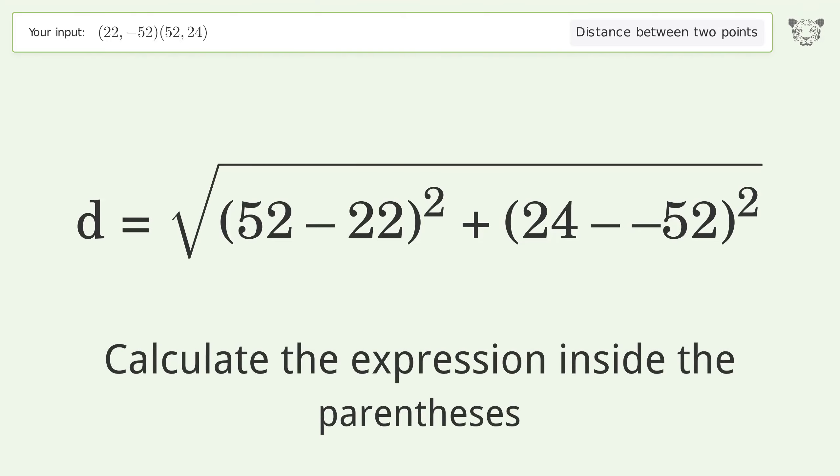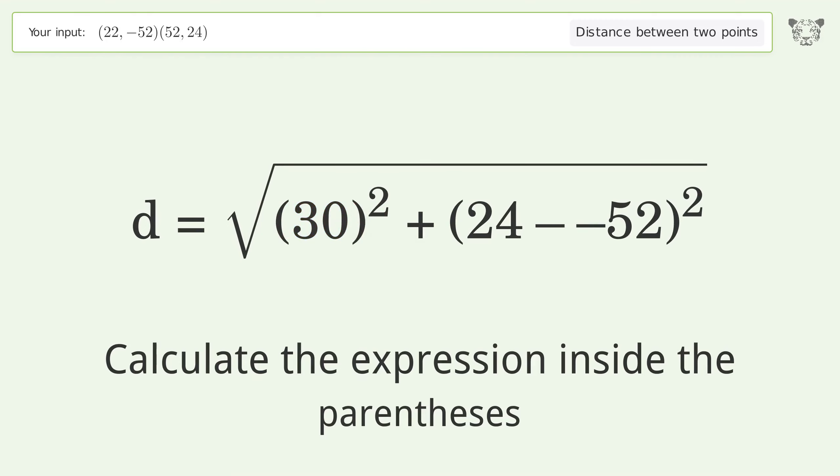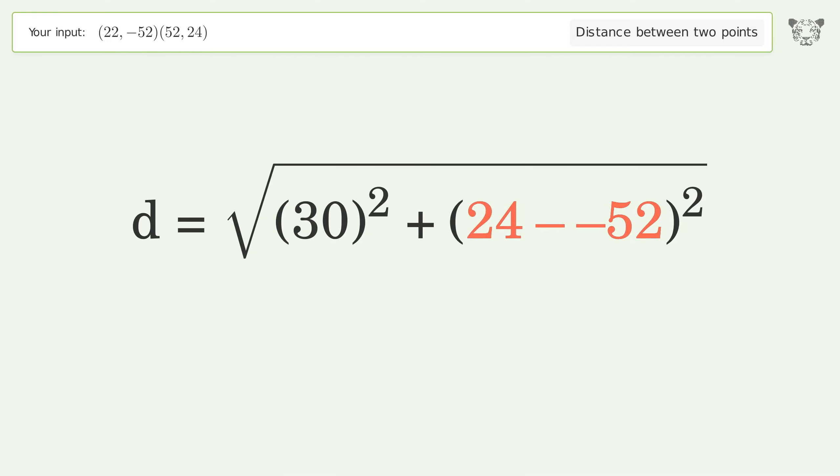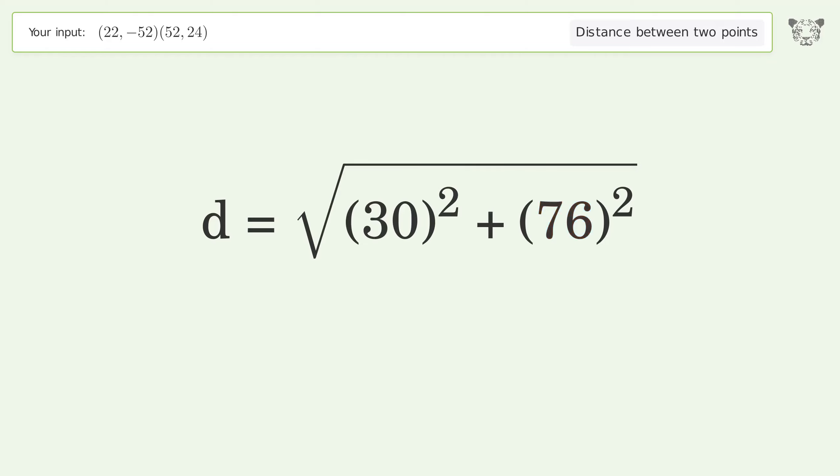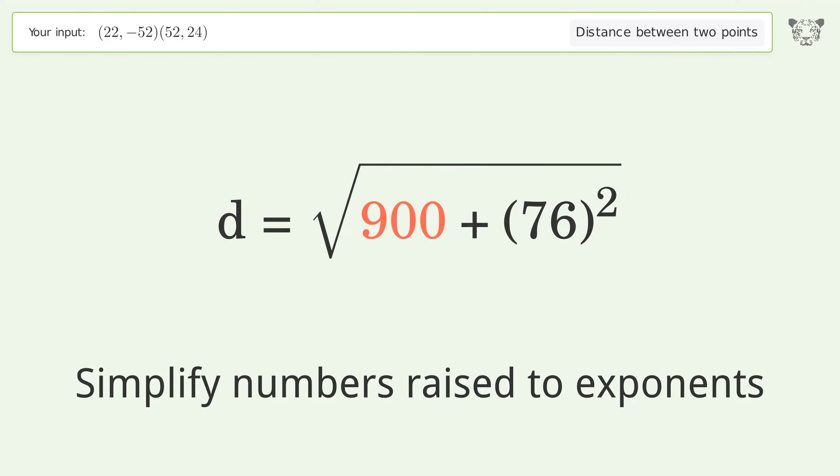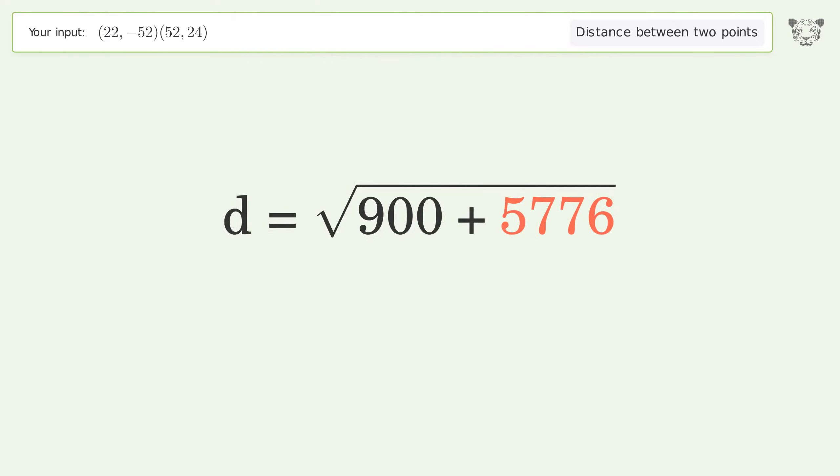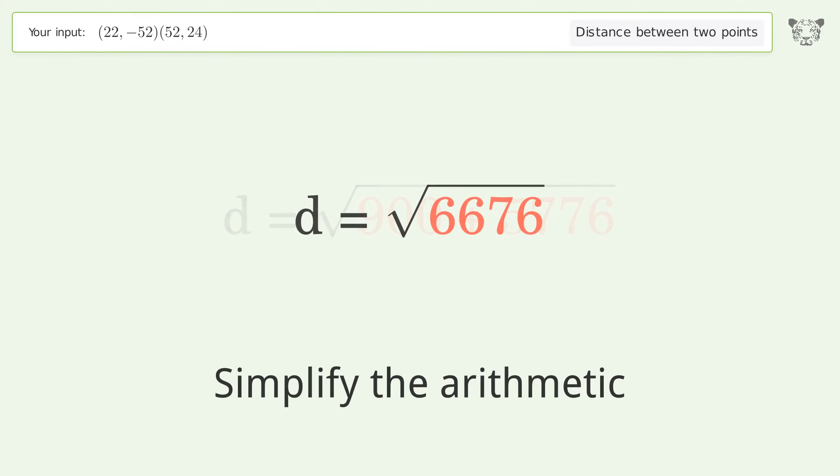Calculate the expression inside the parentheses. Simplify numbers raised to exponents. Simplify the arithmetic and so the distance between the two points is the square root of 6676 or 81.707.